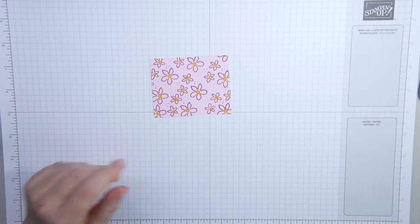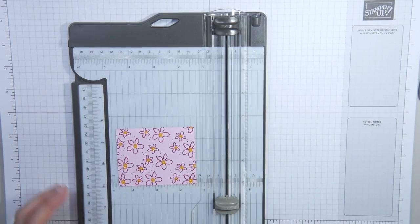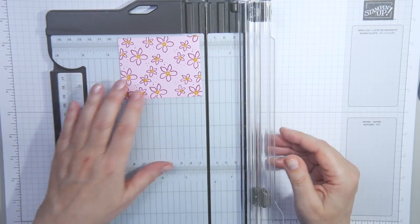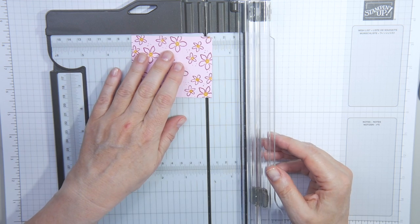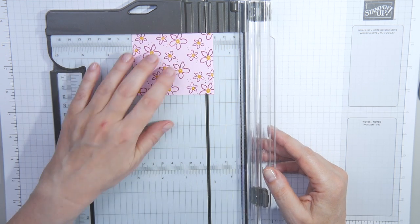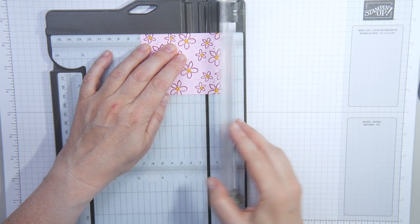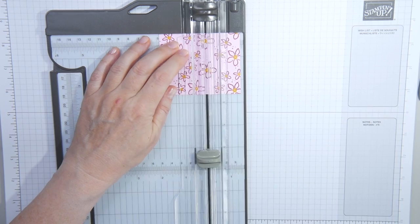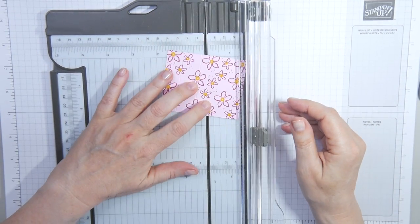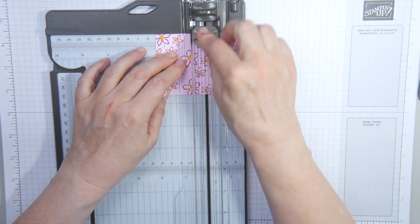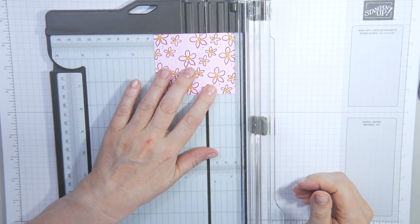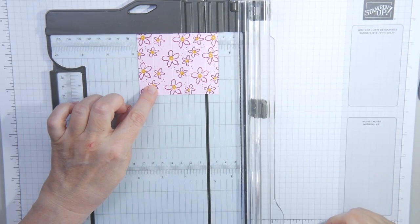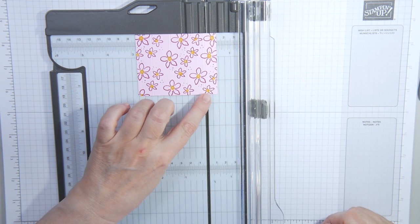And I'll show you where to score. This is the piece which is 3 1⁄4 by 2 5⁄8, 8.2 by 6.6 centimeters. And with that 3 1⁄4 inch side top, so the long side top, the 8.2 side top, you're going to score at 5⁄8 of an inch. Then 1 3⁄8, then 2 inches, and 2 and 3⁄4. And in centimeters, that is 1.6, 3.5, 5.1 and 7 centimeters.